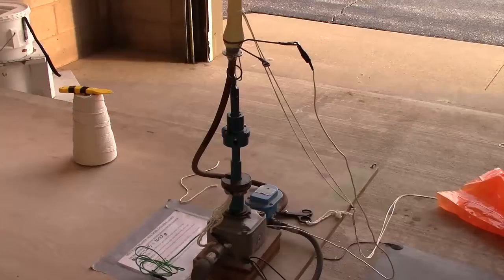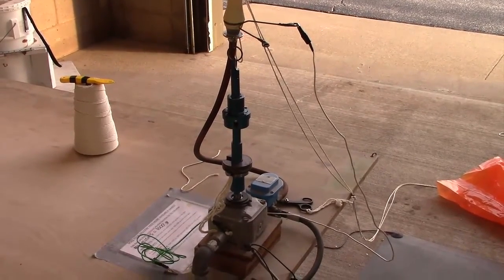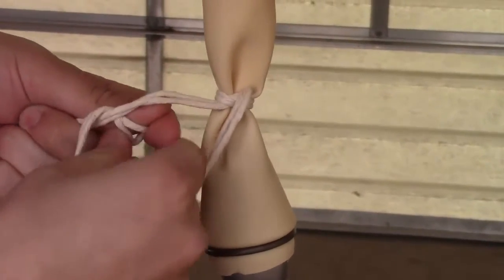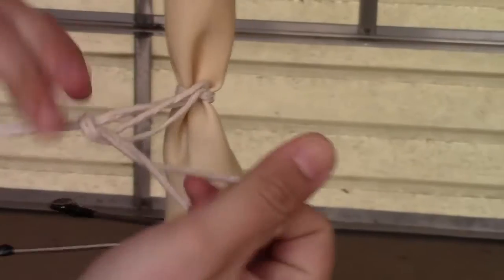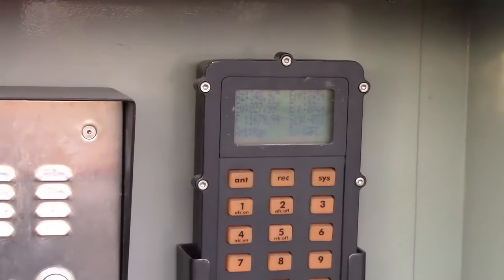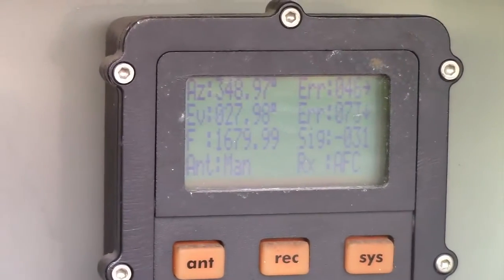At this point we seal the balloon and it's officially connected to the parachute and the radiosonde. As for a neat fact, right now the balloon is roughly about six feet in diameter. After receiving clearance from the lead meteorologist inside and ensuring that all of our sensors are working properly, we are ready for launch.